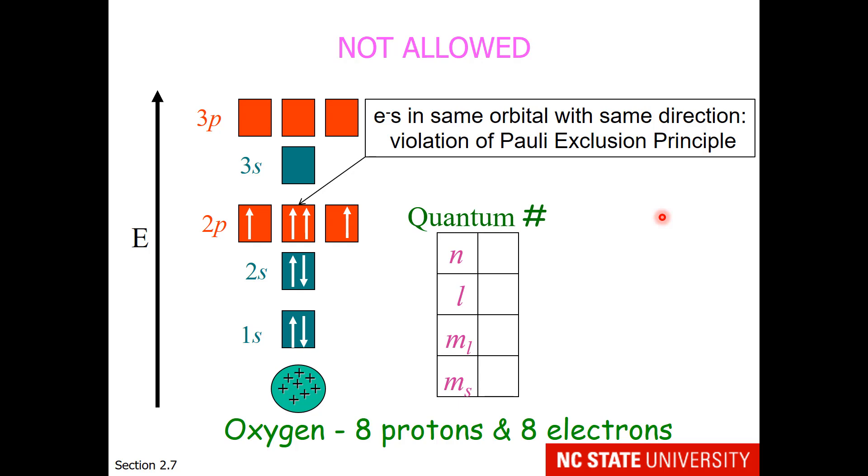If I look at the quantum numbers, this is in the 2p. So n will be 2, l will be 1, m sub s will be plus one half, and I will select that particular m sub l for that orbital to be 0. If I do the quantum numbers of the other electron in that orbital, they are exactly the same. So just as two large objects cannot occupy the same space at the same time, two electrons cannot occupy the same orbital cloud with the same spin.